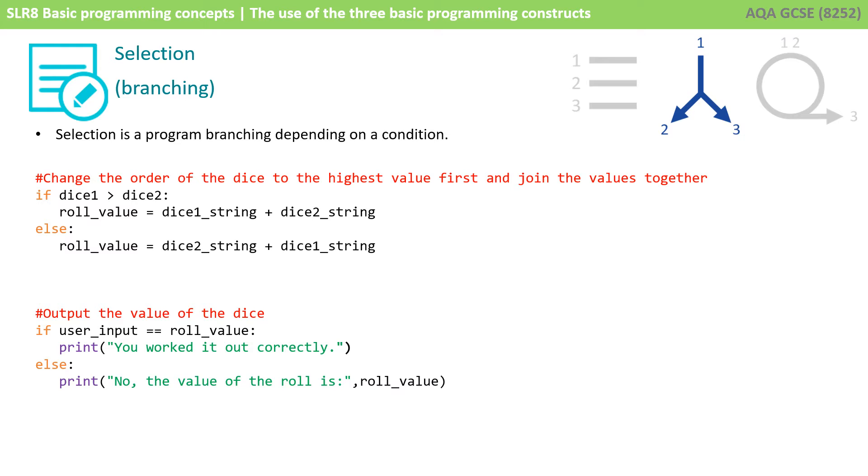Here we can see if Dice1 is greater than Dice2, then we execute the first line of code. Otherwise, or we say else, execute this line of code. And this is quite typical and something by now you'll probably be quite used to.